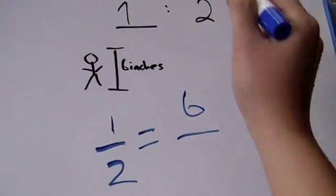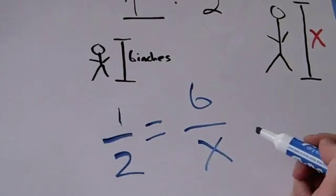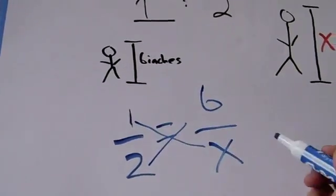1 over 2 is equal to 6 over x. In this proportion, we can now cross multiply.